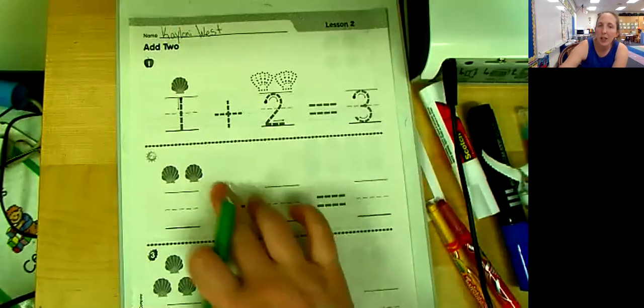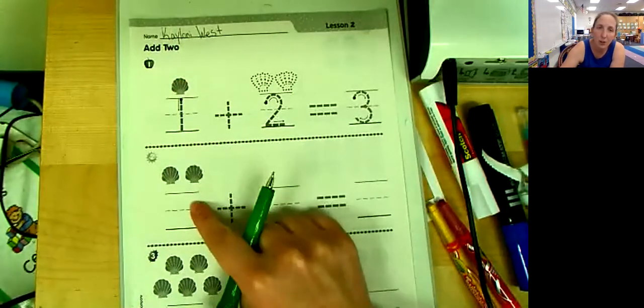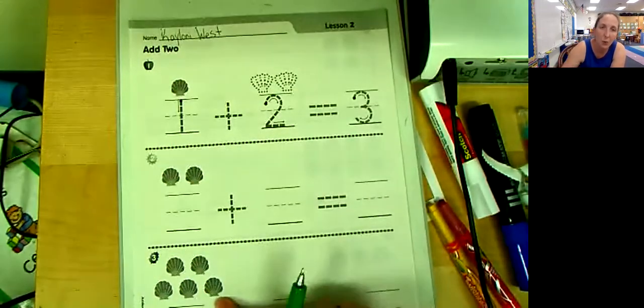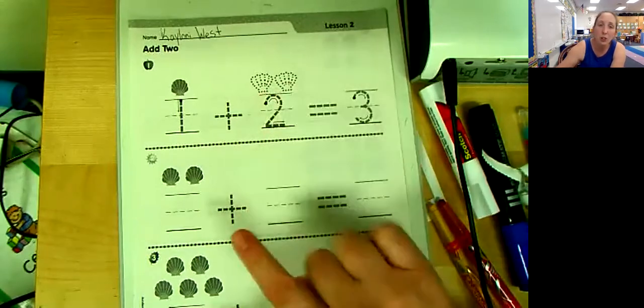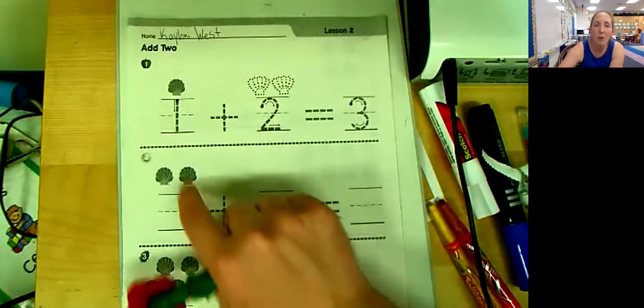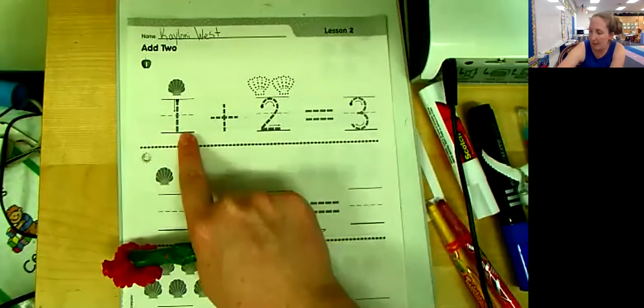All right, and we are going to be, they gave us the first number and no matter what they put here, we're going to be doing plus two. So you can draw plus two, you can use your fingers to plus two, but I want you to write the number of shells that is here.